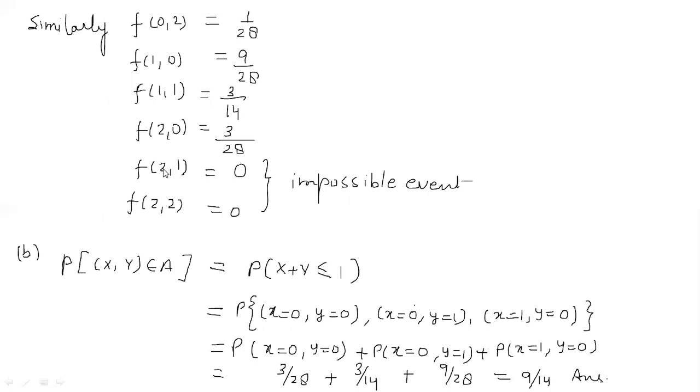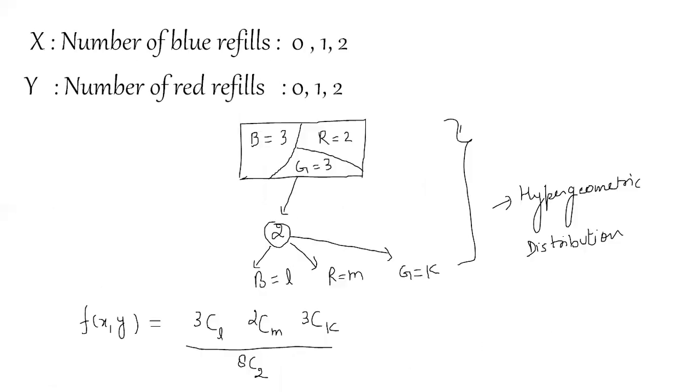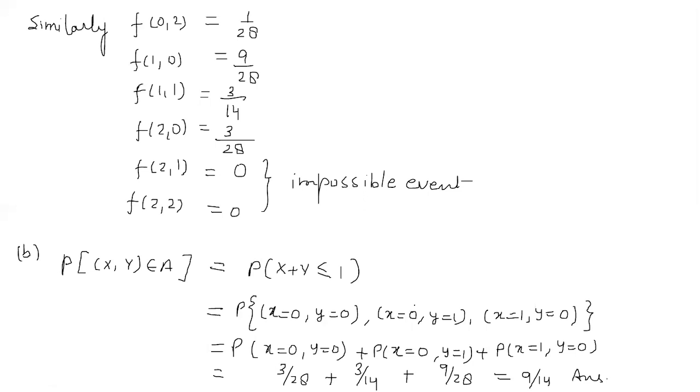2 refills are, x kya hai? Blue. 2 refills are blue and 1 refill is red. Jabki to 3 ho gahi hai to. Jabki hum ne to 2 ball nikalhi hai. To aisa possible nahi hai. To isliye ye impossible events hai. Isliye inki probability zero hai. Is that clear?